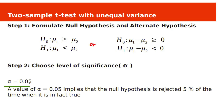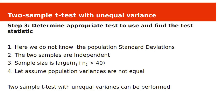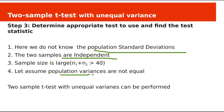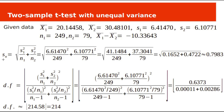We set alpha equal to 0.05. We don't know the population standard deviations sigma1 and sigma2, the two samples are independent, and the sample size N1 plus N2 is greater than 40. Assuming population variances are not equal, we perform the two-sample t-test with unequal variances. The standard deviation is the square root of S1²/N1 + S2²/N2; substituting the sample data gives 0.7983.